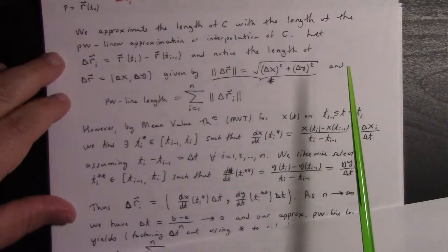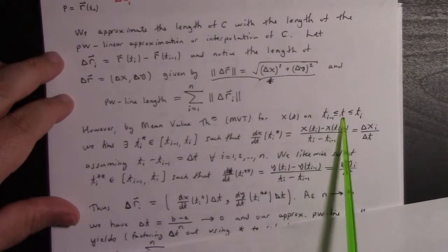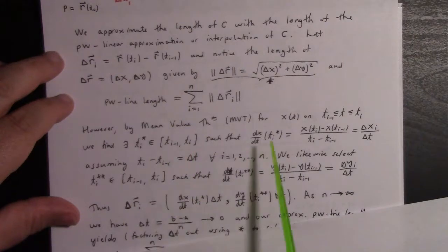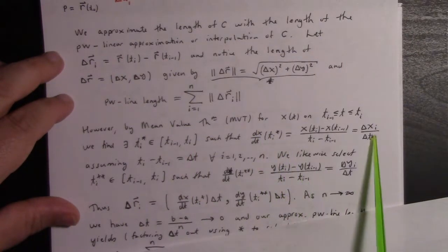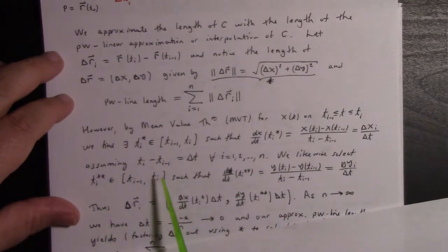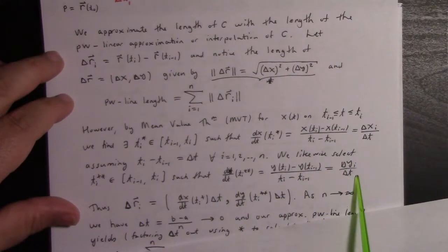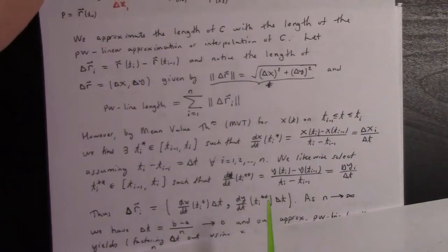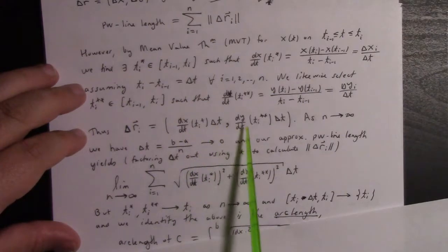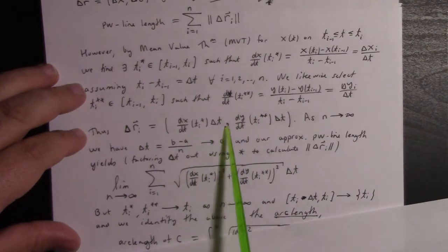The mean value theorem applied to the time interval [Tᵢ₋₁, Tᵢ] says there exists a Tᵢ* such that the instantaneous rate of change for x equals the average rate of change. We can do the same for y: pick Tᵢ** such that the instantaneous rate of change for y equals the average rate of change.